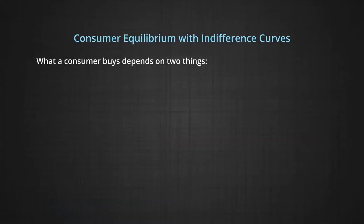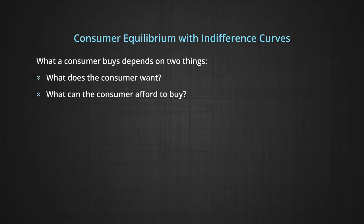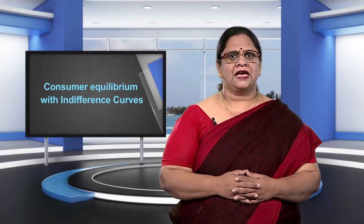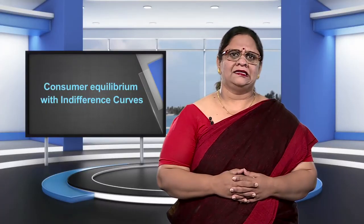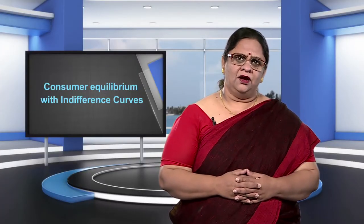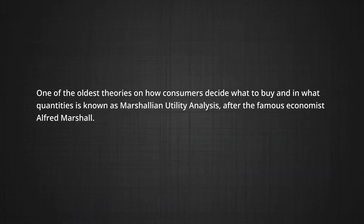What a consumer buys depends on two things: one, what does the consumer want, and two, what can the consumer afford to buy? In this module, we examine the first question — how does the consumer decide what to buy and in how much quantities? Many theories have been offered to explain this. One of the oldest theories on how consumers decide what to buy and in what quantities is called the Marshallian utility analysis, after the famous economist Alfred Marshall.